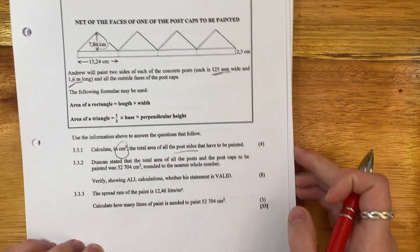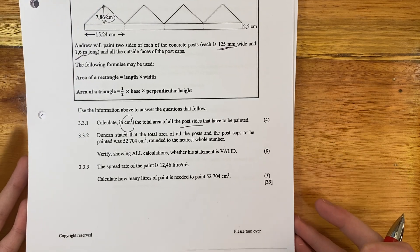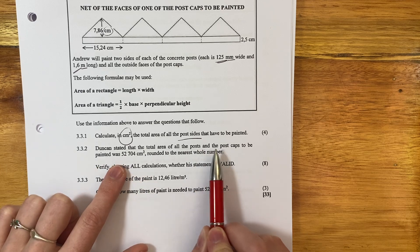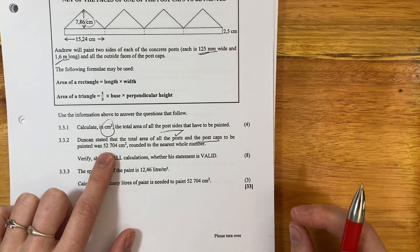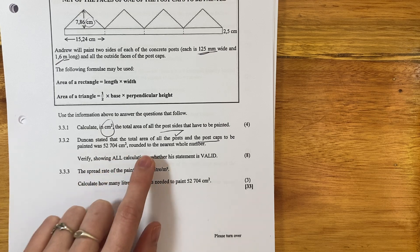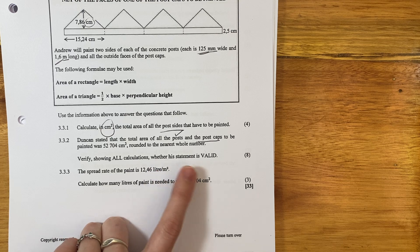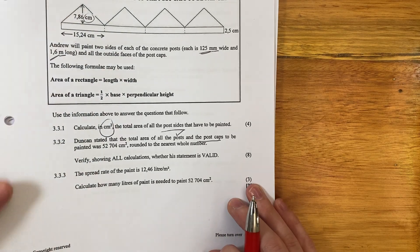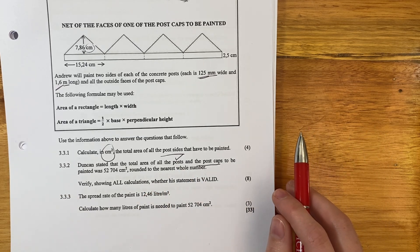Let's continue to the next question. The next question is a big question. Look at that mark allocation. So we're going to be doing quite a lot of working out. And we're okay with that. We're not going to panic. We're just going to do the step by step. Duncan stated that the total area of all the posts and the post cap to be painted was 52,704 centimeters squared, rounded to the nearest whole number. So we're going to have to round off our answer once we do our calculation. Verify showing all calculations whether the statement is valid. So we have to do our calculations and then we have to say Duncan was right or wrong. That last little Duncan is right and wrong, there's a mark allocated there, so don't forget about that.